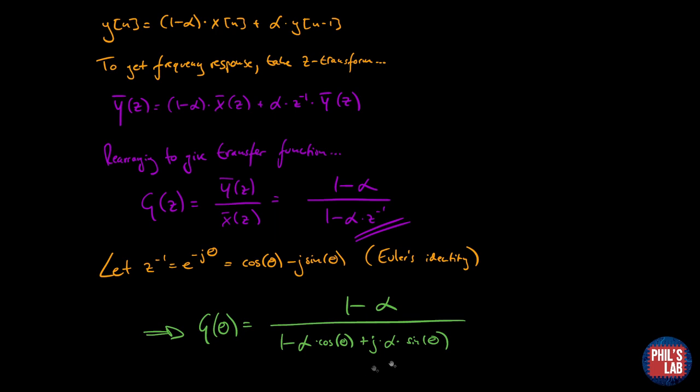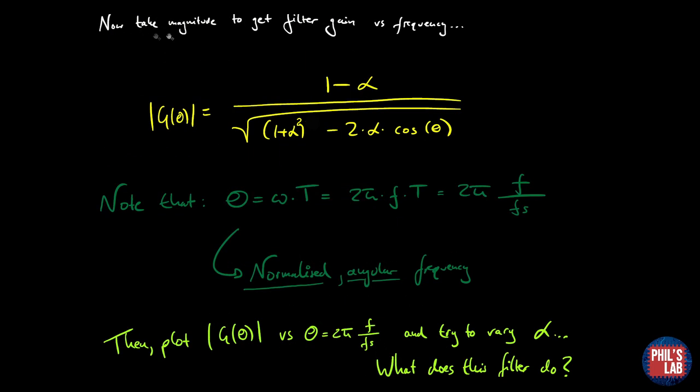We get a complex representation. We can take the magnitude to get the filter gain versus frequency. So taking the magnitude, I've worked out the maths for you, we can plot this. It's not the nicest equation but we can plot this. Theta is actually the normalized angular frequency. Theta by definition is omega times T which is our sampling period.